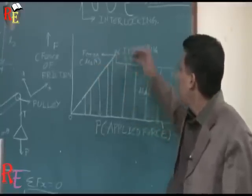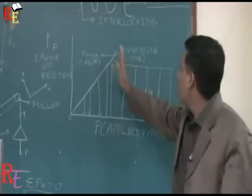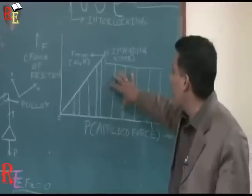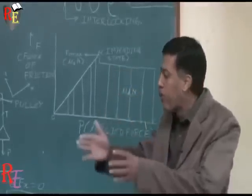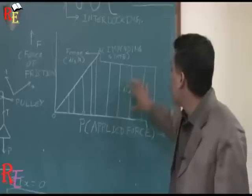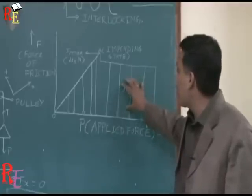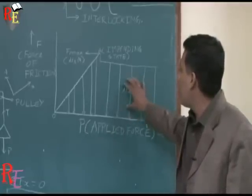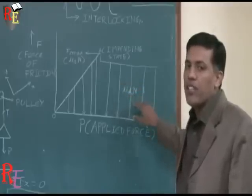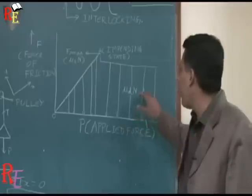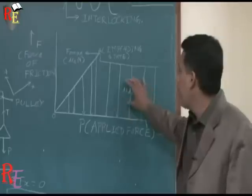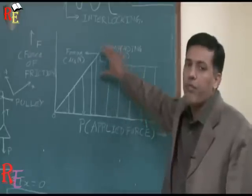Once we cross point A, we enter the domain of dynamic friction, and the body is just about to move or does move. At this point, the force of friction is the dynamic force of friction with value μdN, where μd is the coefficient of dynamic friction and N is the normal reaction. Experimentally, it is found that μd is approximately 0.75 times μs.